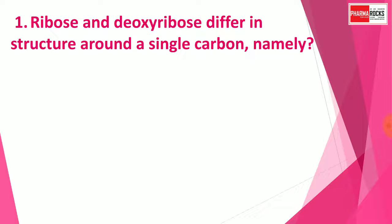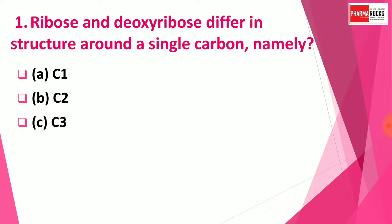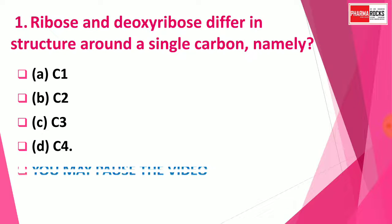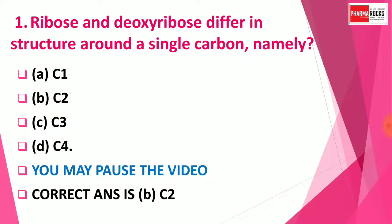Question 1: Ribose and deoxyribose differ in structure around a single carbon, namely — Option A: C1, Option B: C2, Option C: C3, Option D: C4. You may pause the video to think about the correct answer. The correct answer is Option B: C2. The only difference between ribose and deoxyribose is at the C2 carbon.